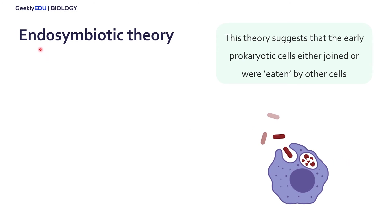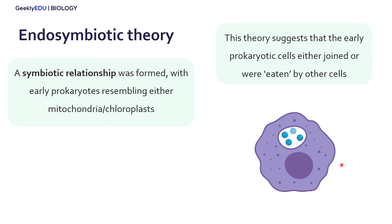The endosymbiotic theory suggests that early prokaryotic cells were either joined or eaten by other cells. We can imagine one prokaryotic cell eating another type, but instead of breaking down the prokaryotic cell that was just eaten, it kept that prokaryotic cell within its own cell membrane and let it live there. We think this symbiotic relationship first formed with prokaryotic cells resembling mitochondria or chloroplasts, which are the organelles that provide energy — so these cells were eaten but kept around because they could give the host cell more energy.